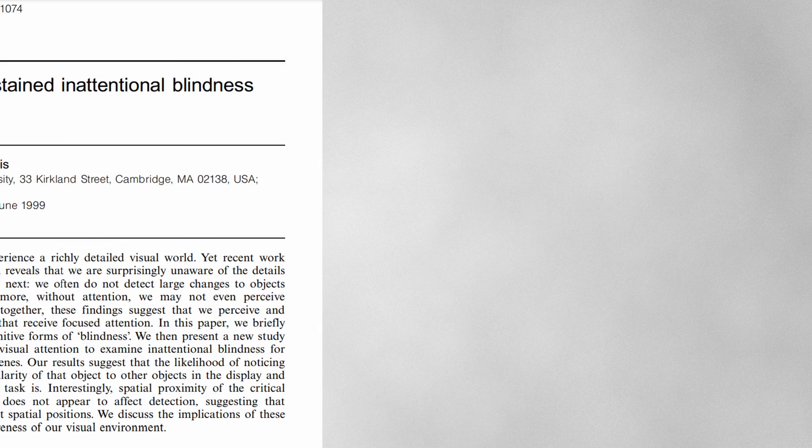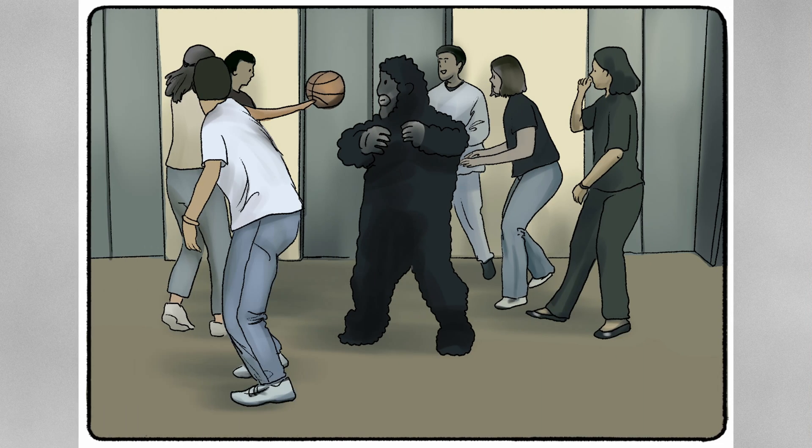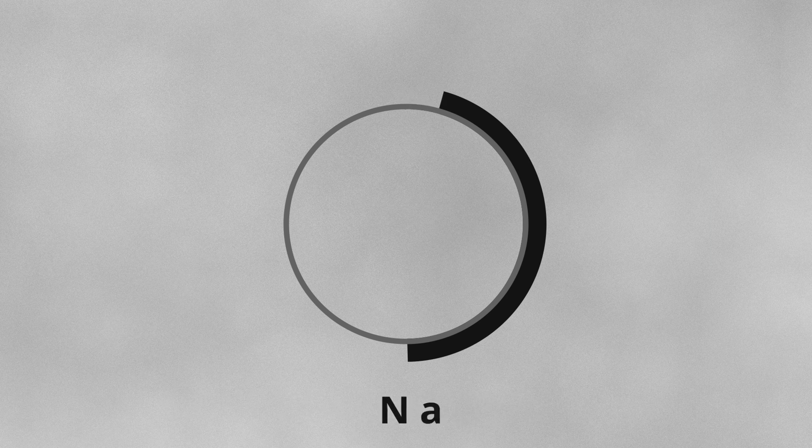A famous example is a study by Daniel Simmons and Christopher Chabris. In the study, there was a video where a few people were passing a ball between each other. Participants were asked to count how many times the ball was passed. In the middle of the video, a huge gorilla walked right through the scene. Surprisingly, only 50% of participants realized there was a gorilla. I used the same trick on you when I asked you to follow the football. You might think it was tricky because all the objects had similar shapes, sizes, and colors, so maybe they just blended in.